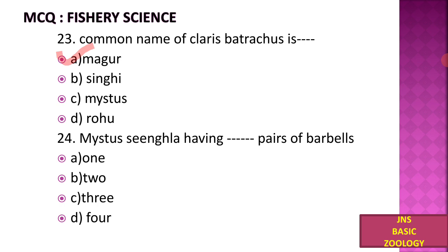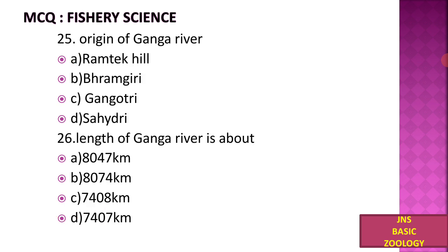Next, Mystus singhala has how many pairs of barbels? A) One, B) Two, C) Three, D) Four. Mystus singhala has four pairs of barbels around the mouth.